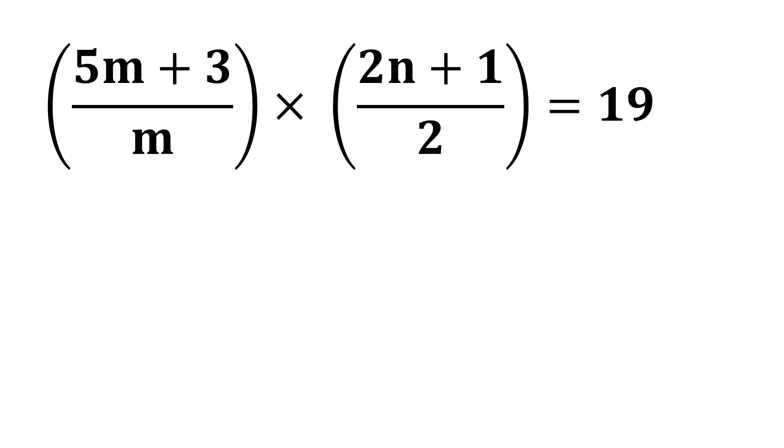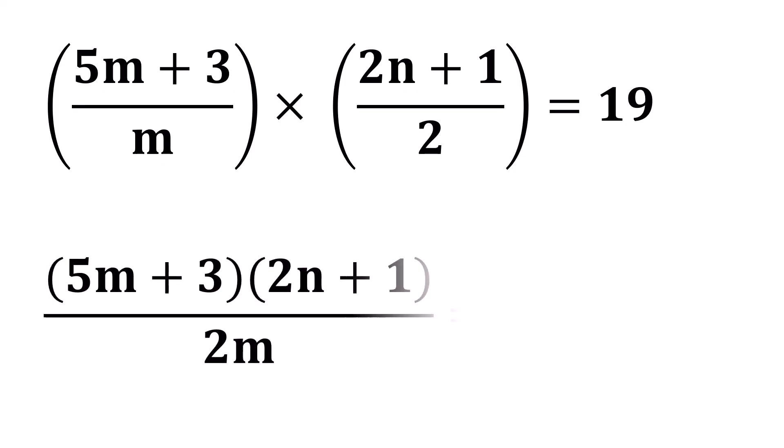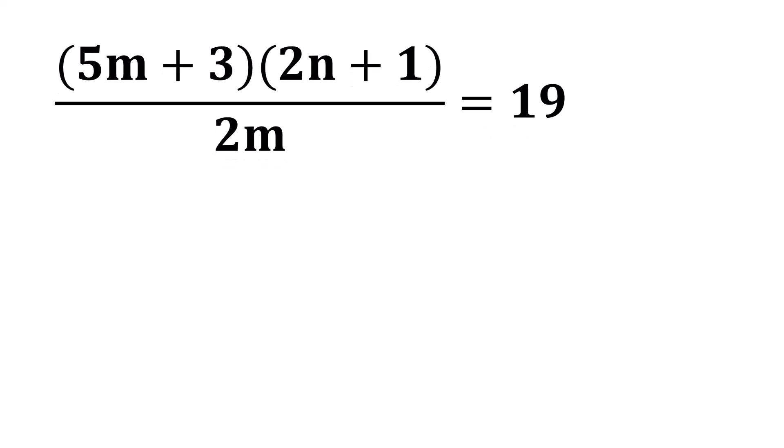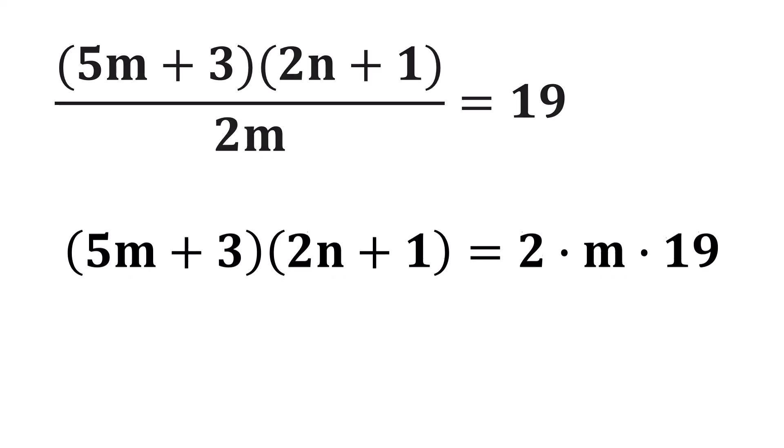Simplifying this, we can write 5m plus 3 times 2n plus 1 all over 2m equals 19. Multiplying both sides by 2m, we can write 5m plus 3 times 2n plus 1 equals 2 times m times 19.